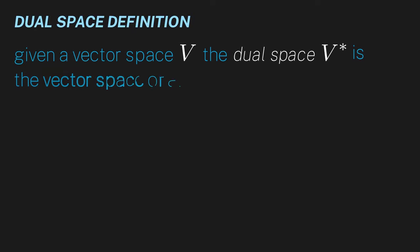This has been specific to R2, but the dual space is a very useful concept in abstract vector spaces. Formally, we define the dual space as follows. Given a vector space V, the dual space V star is the vector space of all linear functionals in V, which remember are just maps that take in vectors and spit out numbers. So all linear functionals L live in V star.